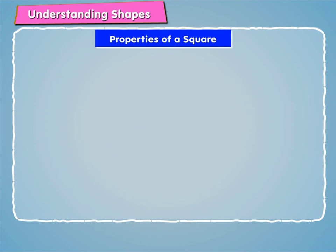After rhombus, we will now learn about properties of a square. Square is a rhombus with each one of its angles 90 degrees. So a square has all properties of a rhombus.